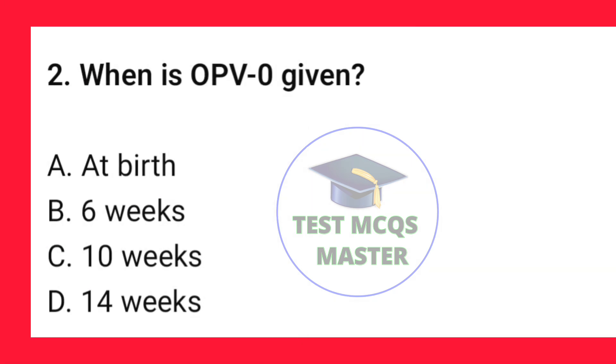Question number 2. When is OPV zero given? The correct option is A — at birth.